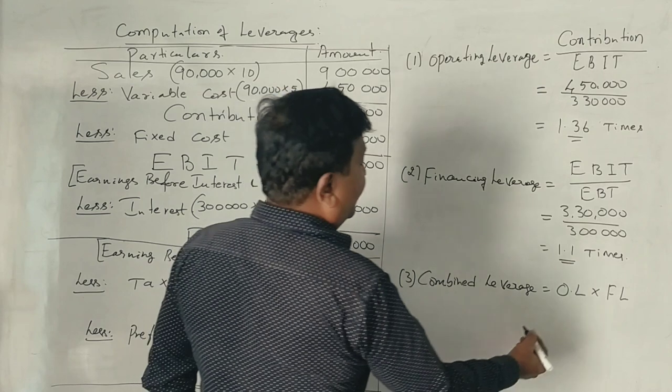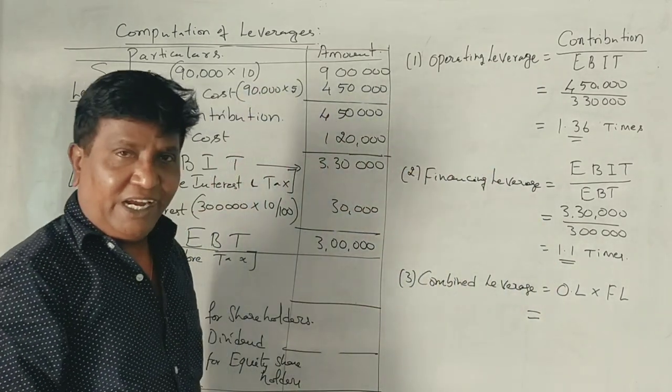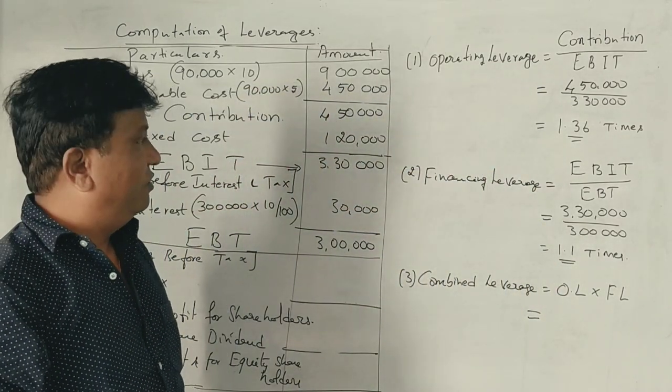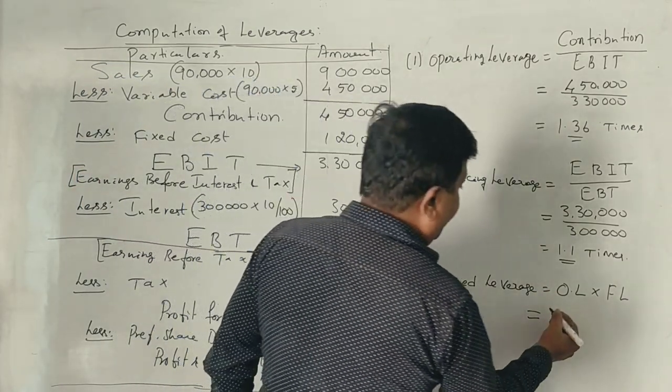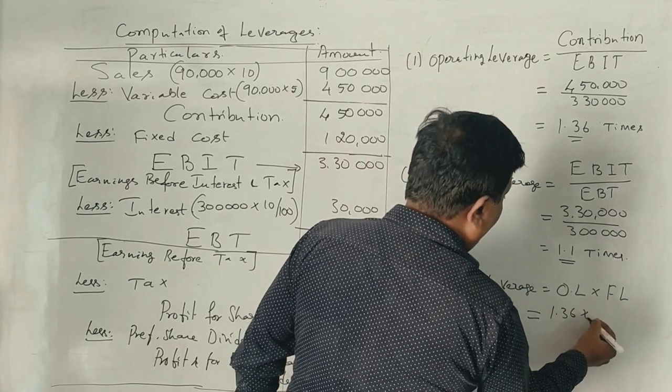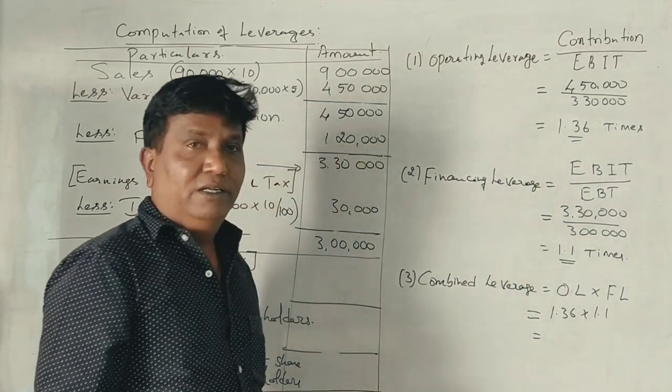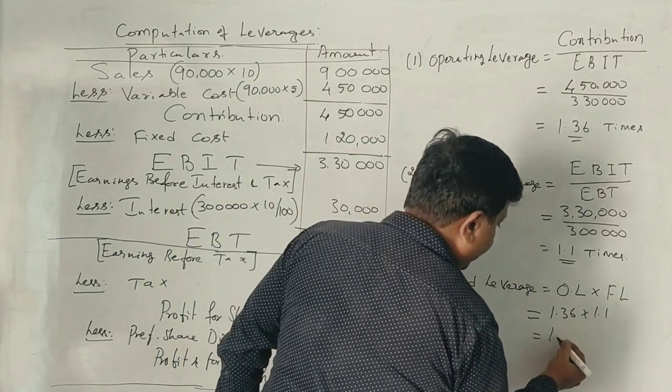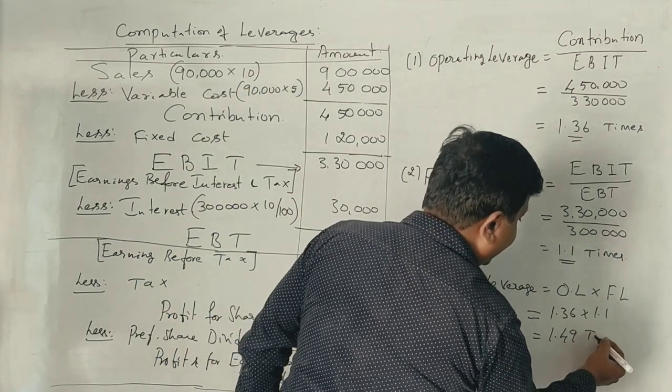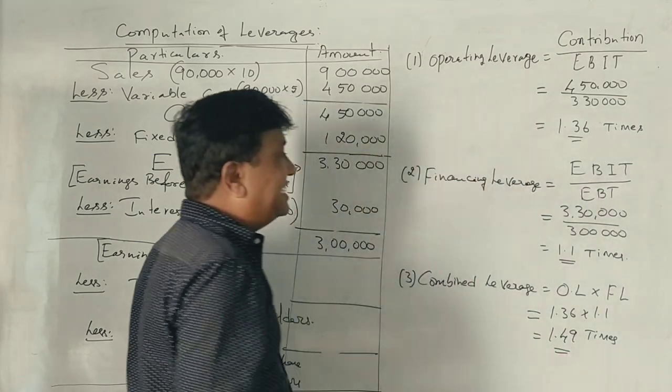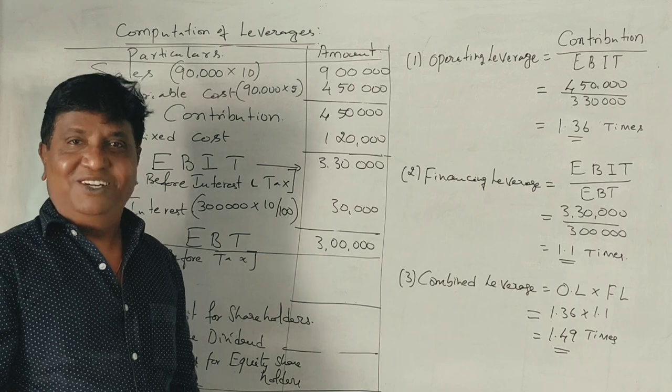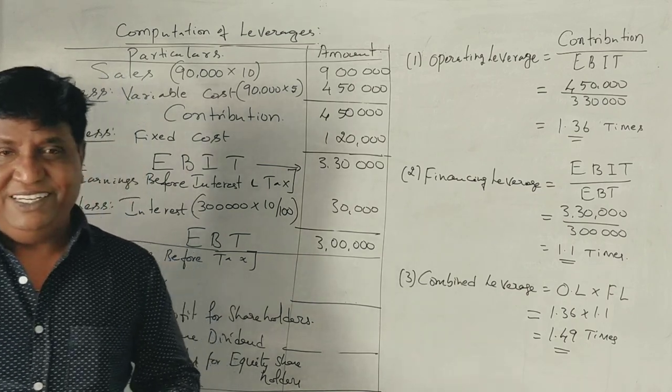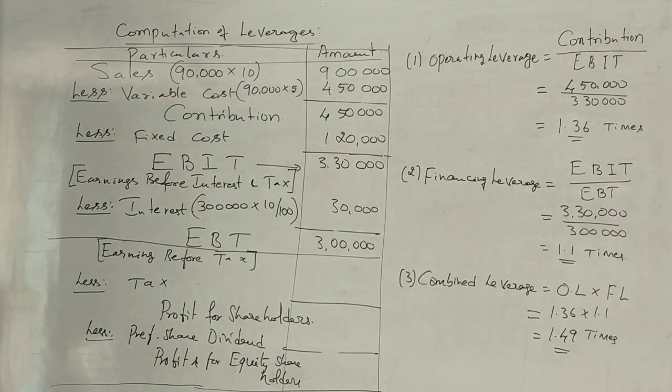Once you calculate operating and financial leverage, combined leverage is easy. We multiply 1.36 by 1.1, which gives 1.49 times. This is the answer. This question is worth 6 marks. Just copy this. Chapter 3.